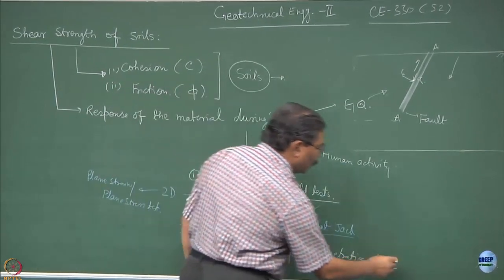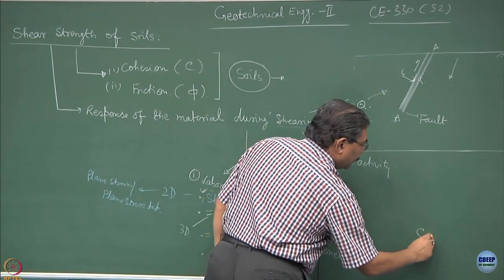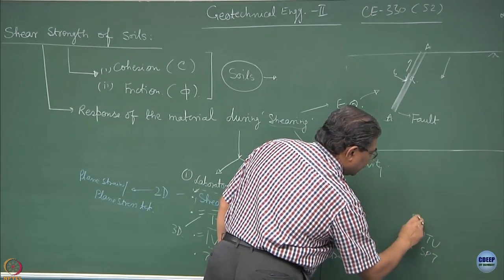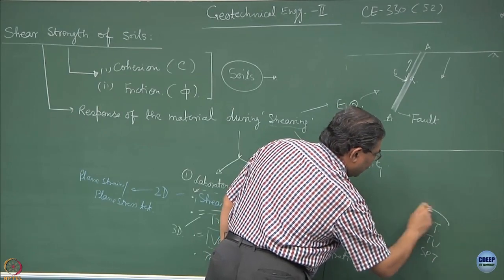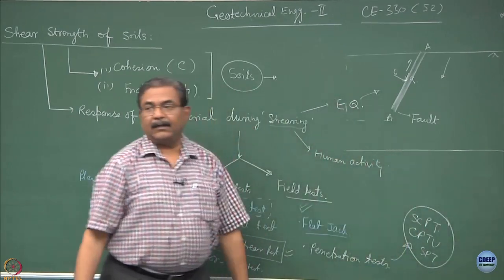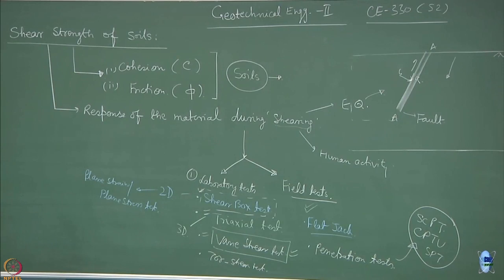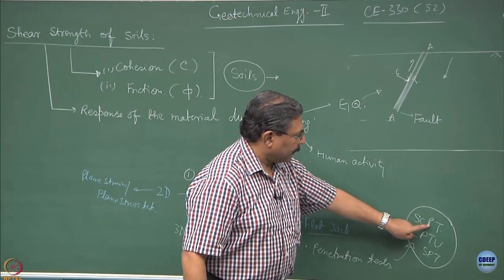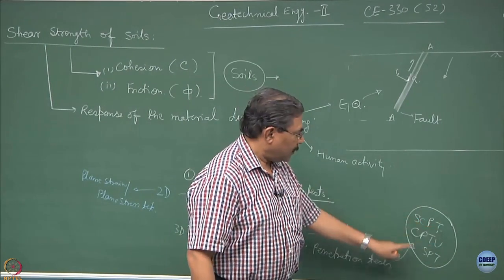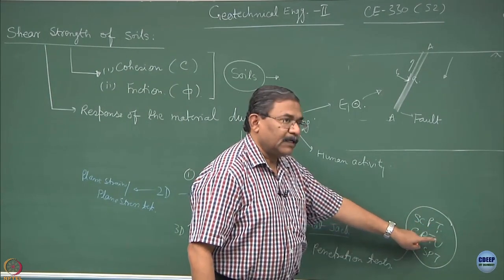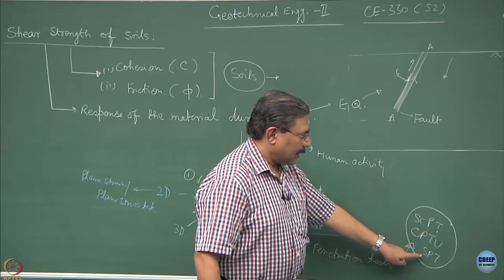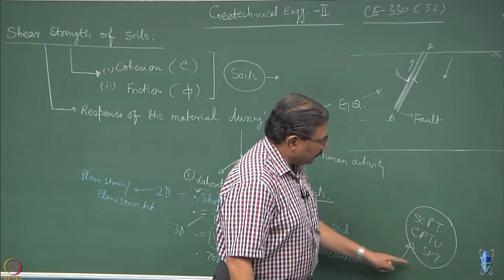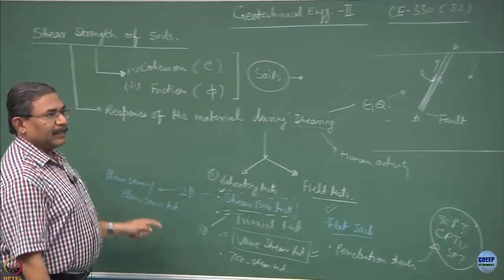But then there are different types of cones. We call them as CPTU, SPT, SCPT, which are conducted in modern day construction of foundations. SCPT is static cone penetration test, CPTU is cone penetration test under undrained conditions, SPT is standard penetration test, and all these tests can be utilized to obtain the shear strength properties of the materials.